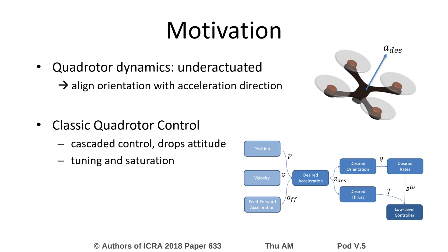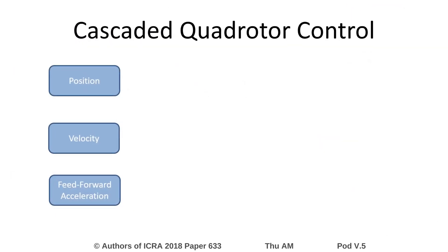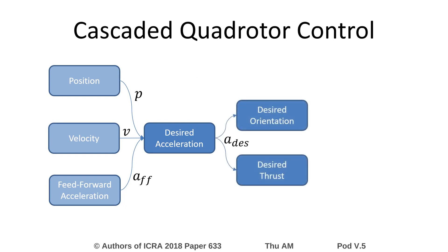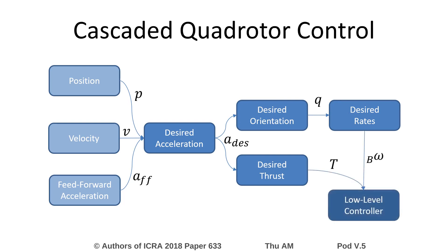In a cascaded controller, position, velocity, and feedforward acceleration are used to compute the desired acceleration, which is then split into orientation and thrust. The desired orientation is controlled by the body rates, which are fed to the low-level controller together with the thrust.